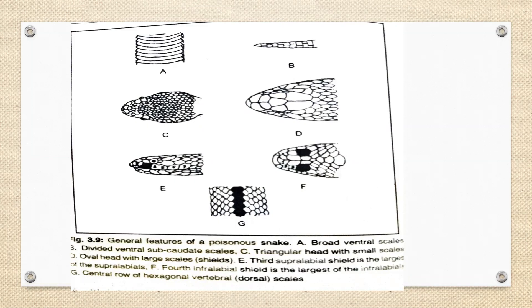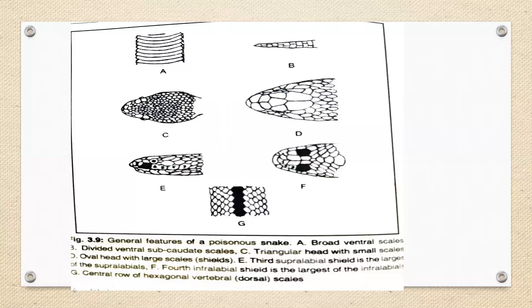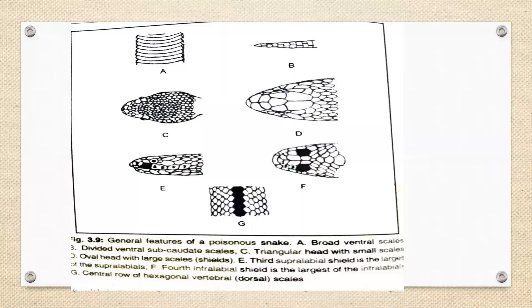The four important poisonous snakes in India are: cobra, krait, and viper — which is again divided into saw-scaled viper and Russell's viper. Once confirmed it is a poisonous snake, differentiate further: krait and cobra are neurotoxic, while viper is vasculotoxic. If the head is triangular with small scales, it is viper. If head scales are larger, it is either krait or cobra.